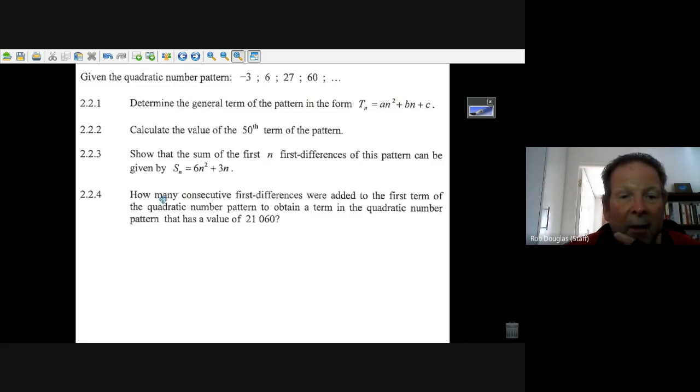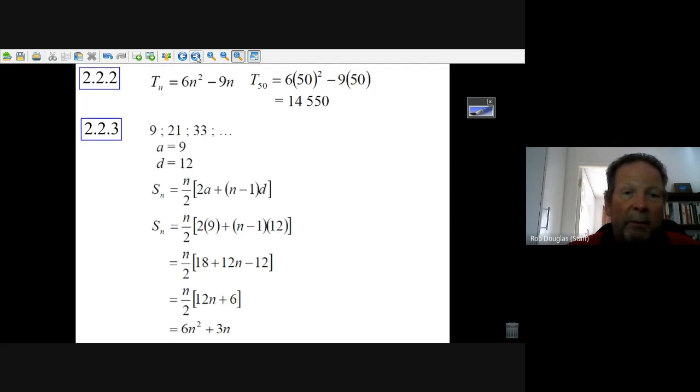It says, how many consecutive first differences were added to the first term to obtain this big giant number, 21,060? The first term of the quadratic number pattern. Well, the first term is minus 3. And the sum of the first differences is 6n squared plus 3n. So we can make an equation, minus 3 plus this to equal that number. That's the equation that we're going to do.